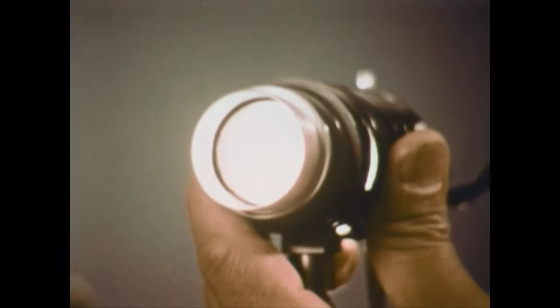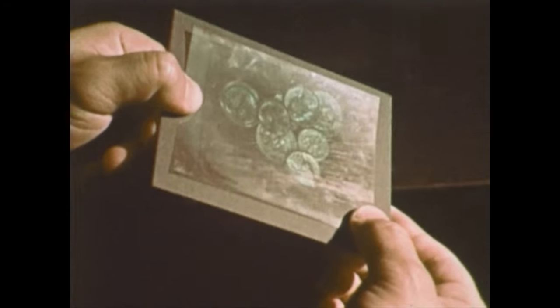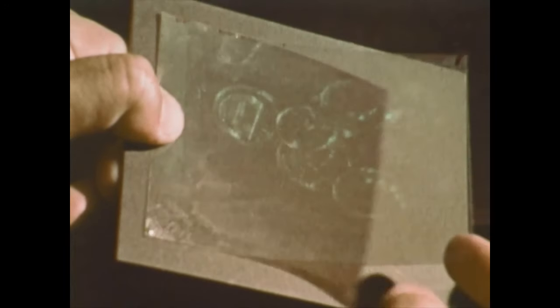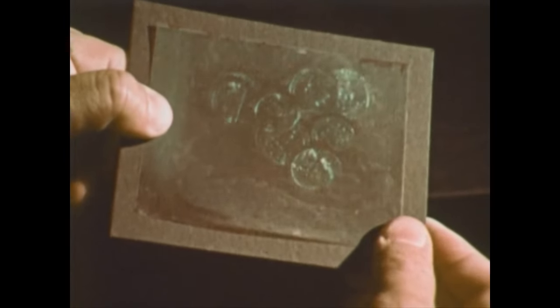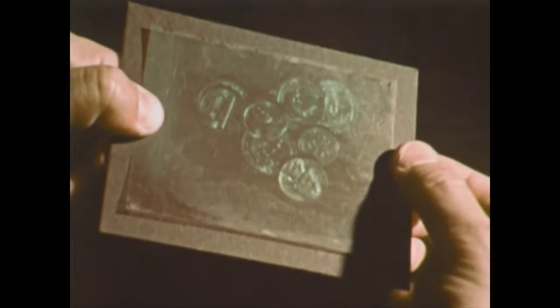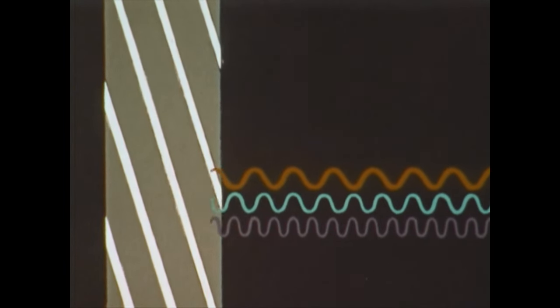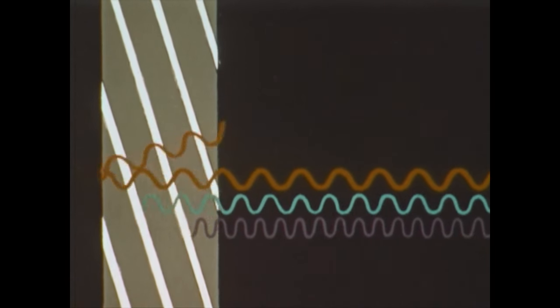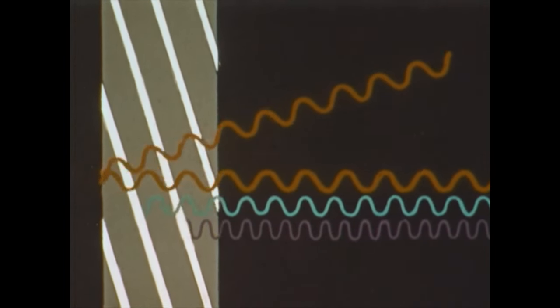An ordinary white light is used to view this hologram. Why does white light reconstruct this kind of hologram? A cross section of the emulsion looks like this. White light approaches and passes through the film. The mirror planes are spaced to reinforce only the wavelength used to make the hologram. Because the film shrinks in processing, the green color of shorter wavelength is reinforced rather than the red.